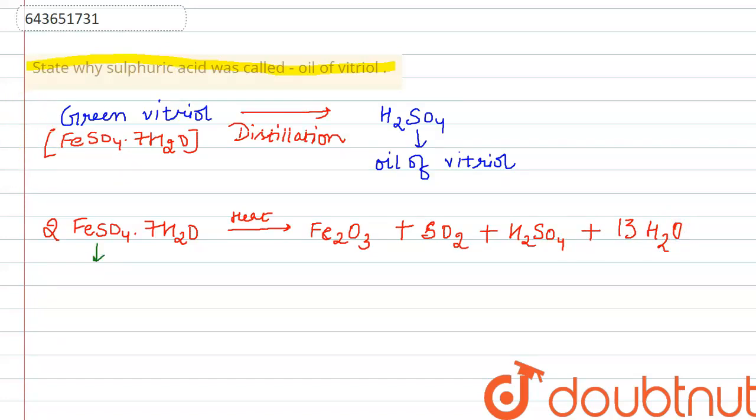In this over here, FeSO4·7H2O is known as green vitriol and sulphuric acid is known as oil of vitriol, which is sulphuric acid.